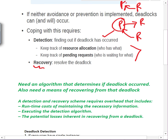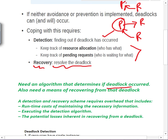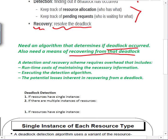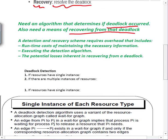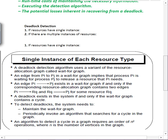When we detect that a deadlock has occurred, we apply recovery schemes to resolve it. First we determine if deadlock occurred, and second we recover from it. Detection and recovery schemes require overhead: a runtime cost for maintaining necessary information like allocations and pending requests, executing the detection algorithm which is time-consuming, and losses inherent in recovery where we may have to kill some process.